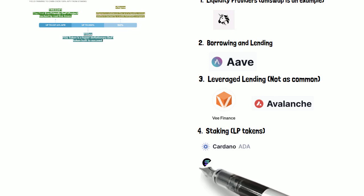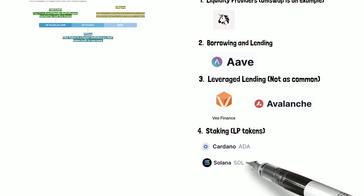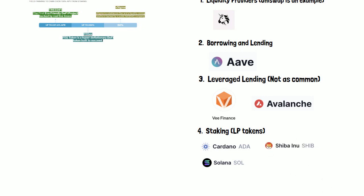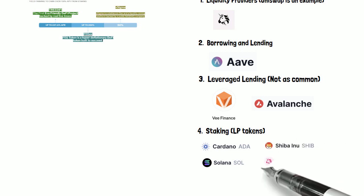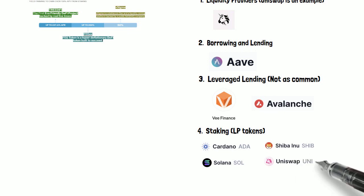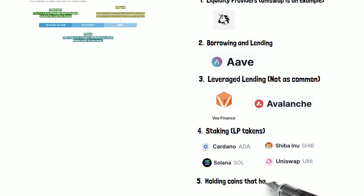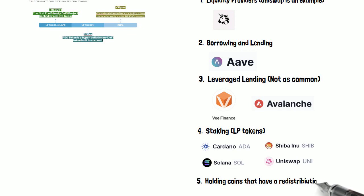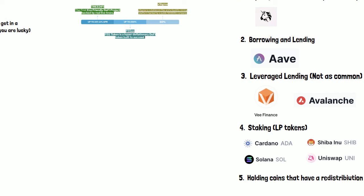Another option is staking. You can have LP tokens, or liquidity provider tokens, from platforms like Cardano (ADA), ShibaSwap, Shiba Inu, Solana, and Uniswap. With ShibaSwap, for example, you're also going to get other liquidity provider tokens like the Bone token for providing liquidity and for staking. There are also tokens that pay a redistribution fee, which is another option that allows you to get some returns as well.